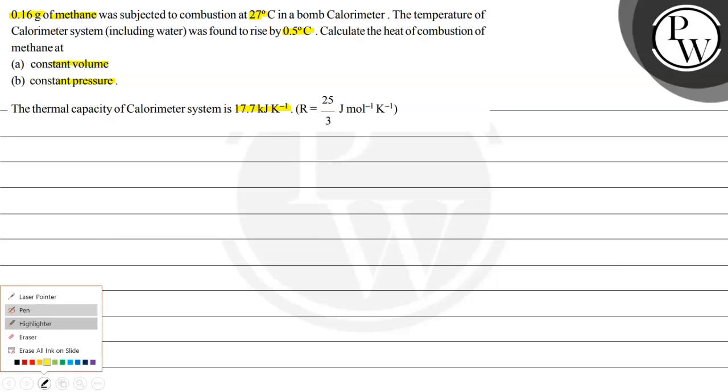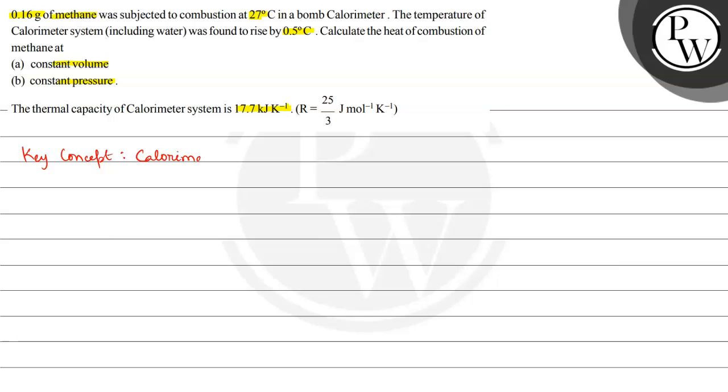The key concept is calorimetry. Here we have the methane combustion reaction: CH₄(g) + 2O₂(g) → CO₂(g) + 2H₂O(l). Two moles of oxygen are required to do the complete combustion of methane.